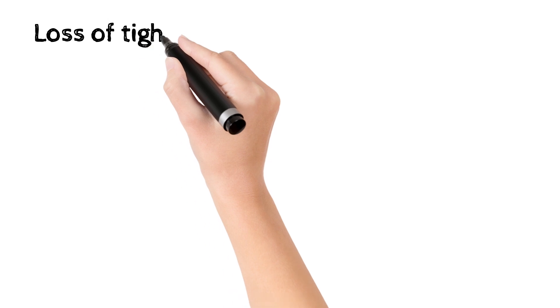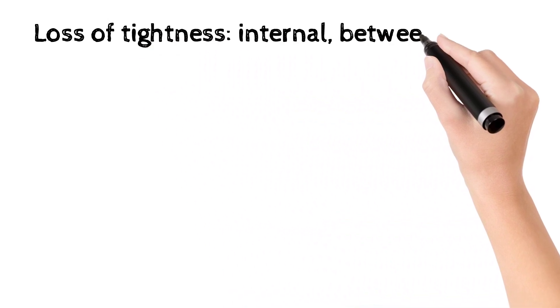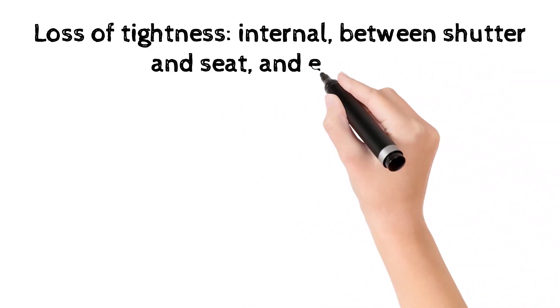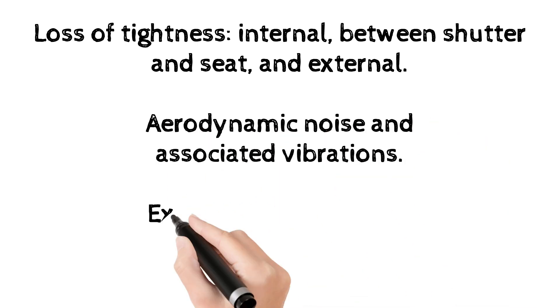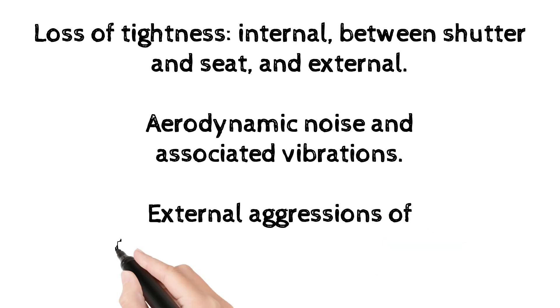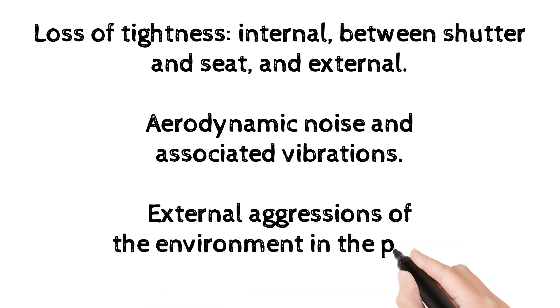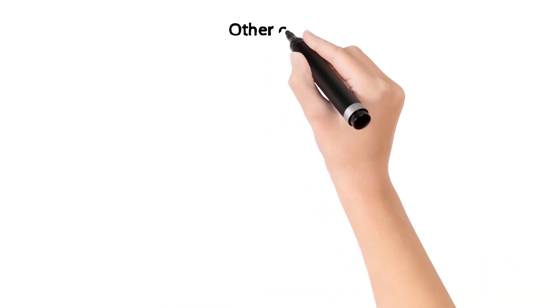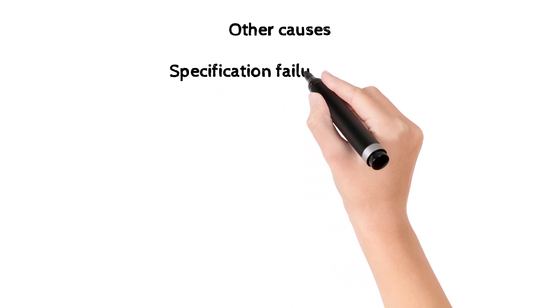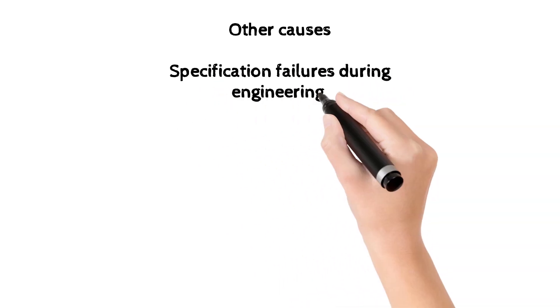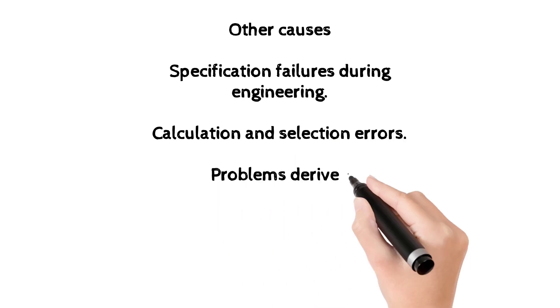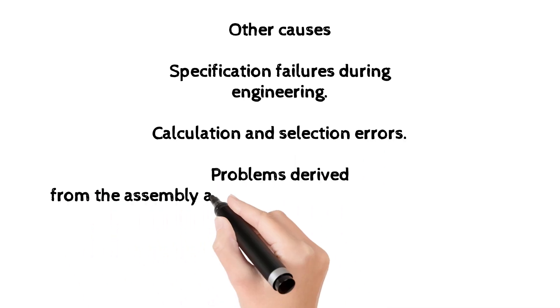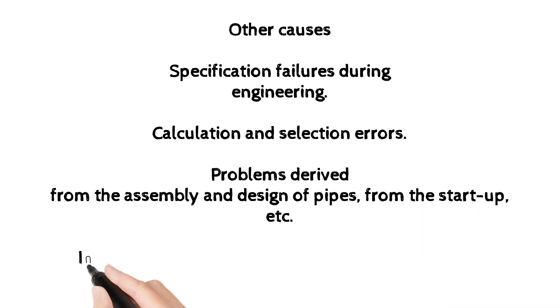Loss of tightness internal, between shutter and seat, and external. Aerodynamic noise and associated vibrations. External aggressions of the environment in the plant. Other causes: specification failures during engineering, calculation and selection errors, problems derived from the assembly and design of pipes from the start-up, etc. Inadequate maintenance in the first interventions.